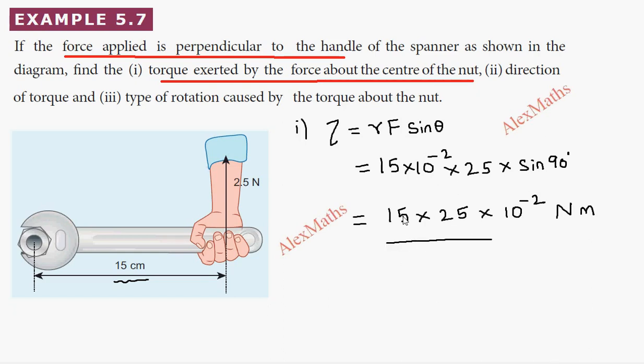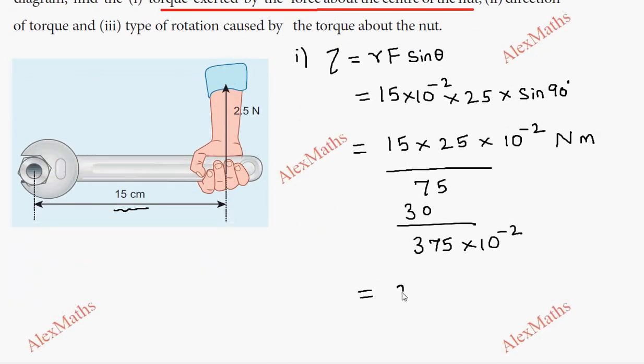15 times 5 is 75, 15 times 2 is 30, giving 375 times 10 power minus 2. Moving two decimal places, this equals 3.75 newton meters.